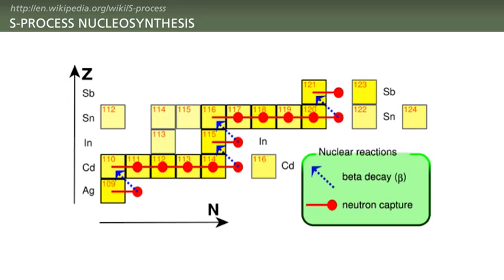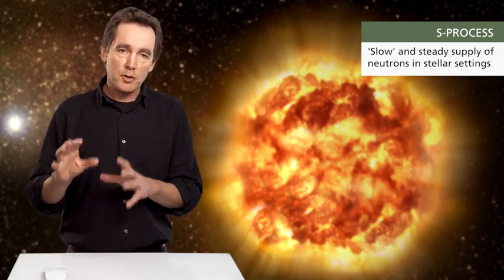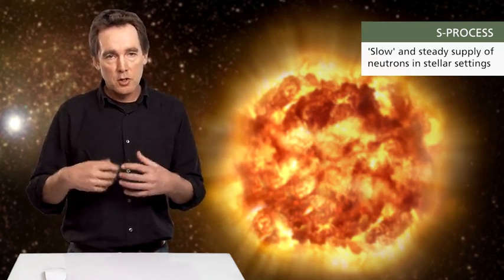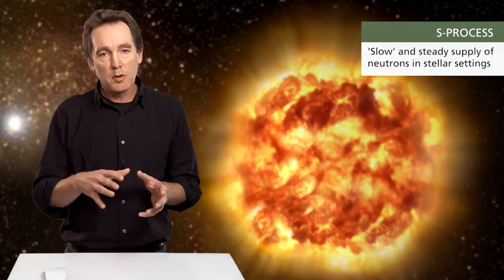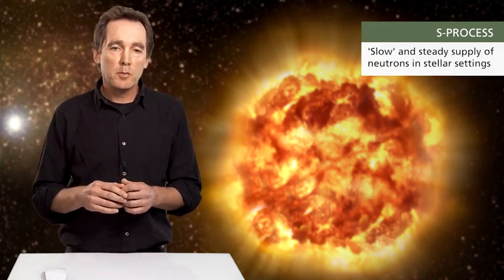But this does not explain the existence of isotopes like cadmium 116 for example because you can see there's a gap there and when you form 115 it goes to indium 115. So to explain the existence of cadmium 116 you have to come up with another process. The previous process was called S-process nucleosynthesis. That is the slow delivery of neutrons to existing nuclei so that you can populate the chart of the nuclides by this fashion.